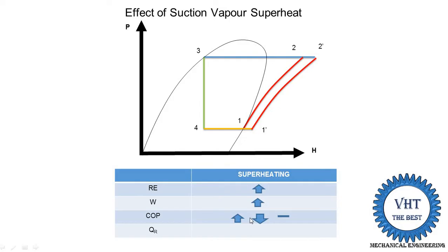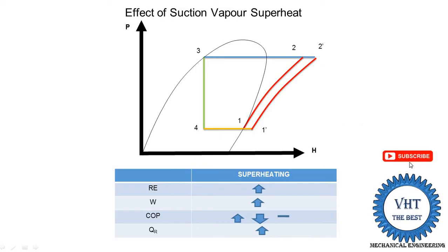For example, if we use R12, the COP is increased. If we use R22 or NH3, it may be reduced. So depending on the refrigerant and pressure range, COP may be increased, reduced, or constant. Regarding heat rejection in the condenser: in the earlier case the line is smaller, H2 minus H3. After superheating, the length is increased for H2-dash to H3, meaning heat rejection in the condenser is increased.